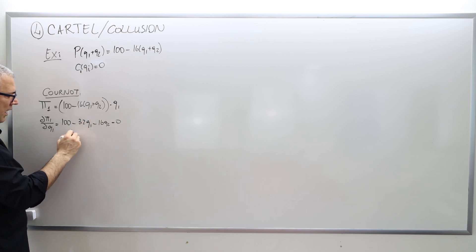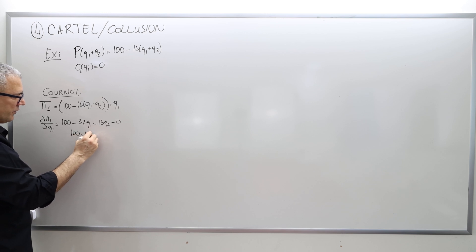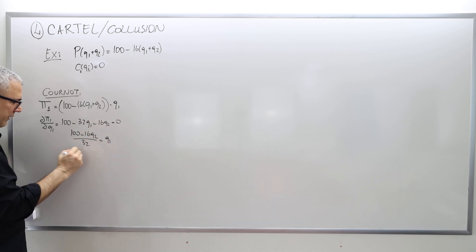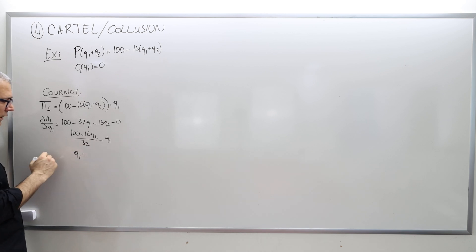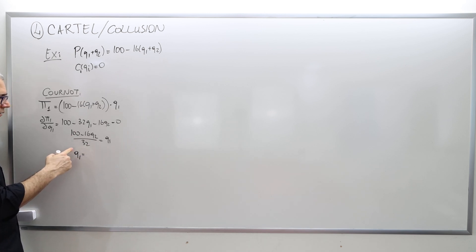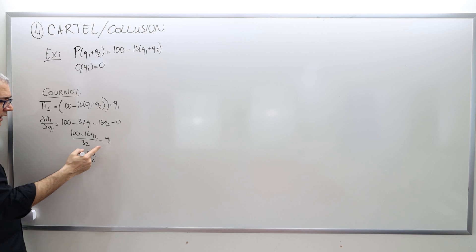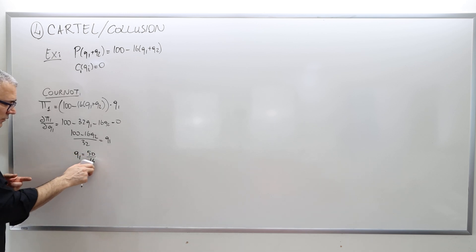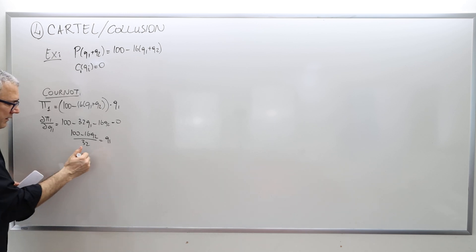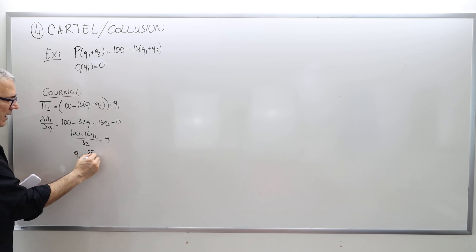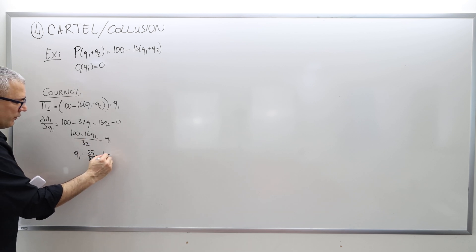That means Q1 equals (100 minus 16 Q2) divided by 32. Simplifying: Q1 equals 25/8 minus 1/2 Q2. That is the reaction function for firm one.